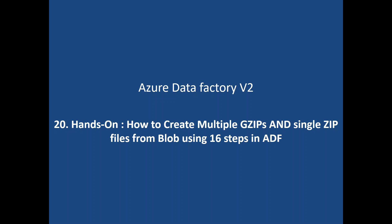We'll take two CSV files and run a pipeline. Instead of creating a single gzip file, it will create multiple gzip files. With a single zip file, if you have 10 or 20 different CSV files and try to create a single zip, it will combine everything into one file. But when you try the same thing with gzip, that will not work - gzip creates a corresponding gzip file for each individual file. We're going to follow 16 steps to complete this.